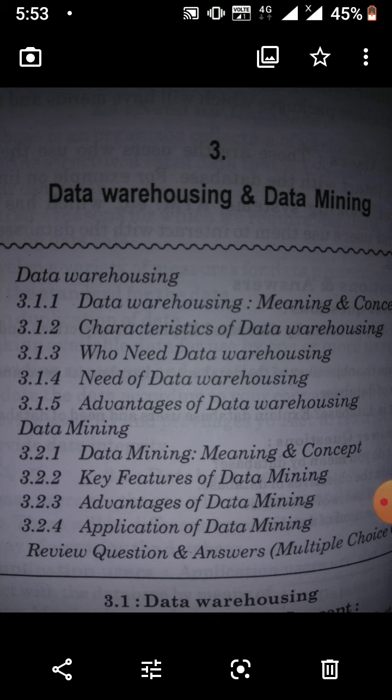Characteristics of data warehousing: First is subject-oriented — if a company has data, it is organized by subject to help form decision-making policies. Then it is integrated — a lot of data is integrated together. Time-variant — operational systems reflect current values, but data warehouses store data over a long time horizon, meaning historical data is stored, mainly meant for data mining and forecasting, helping users search for buying patterns of specific customers. Finally, non-volatile — the data is secure and remains for a long time.